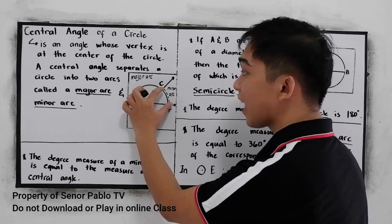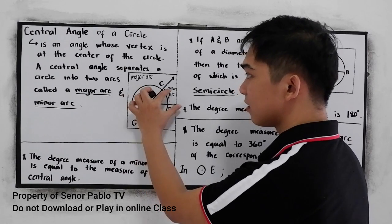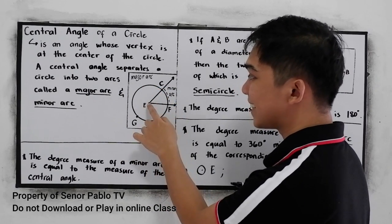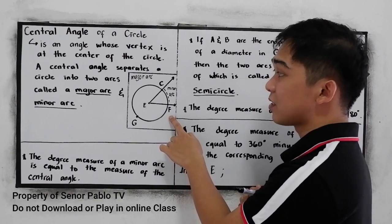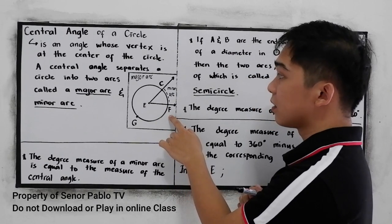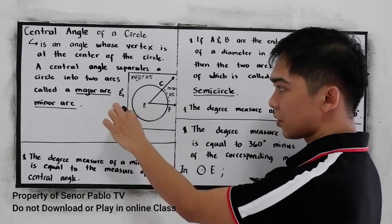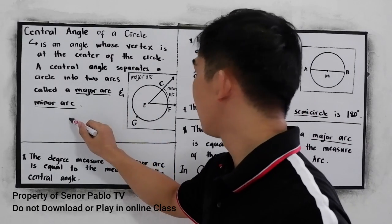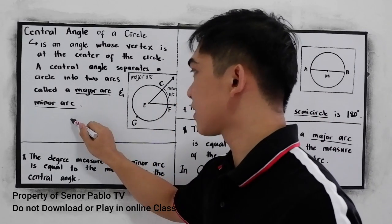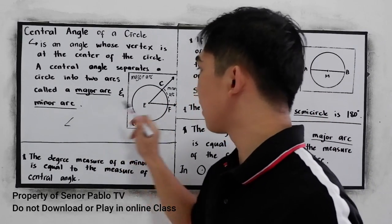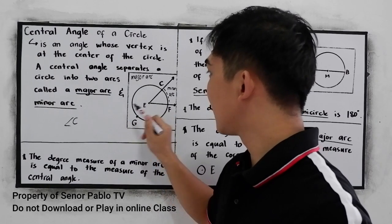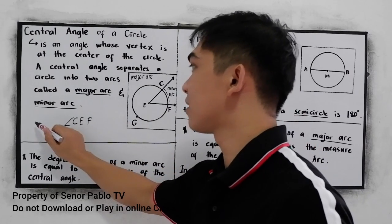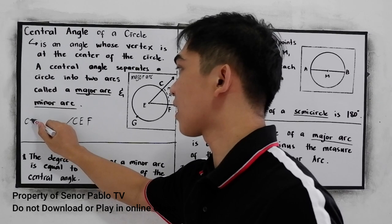And the bigger arc is what we call the major arc. In this case, our central angle is C, E, F. It separates the minor arc and the major arc. So our central angle in this illustration is angle CEF. This is our central angle.